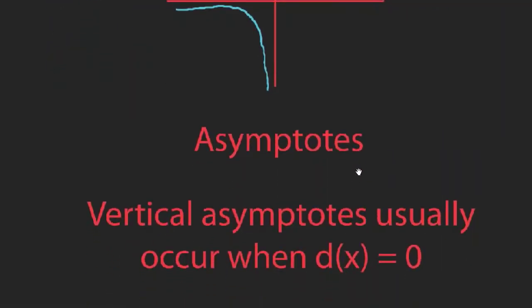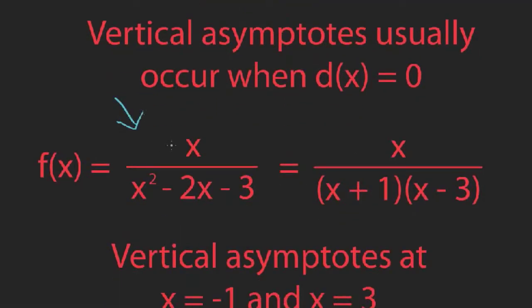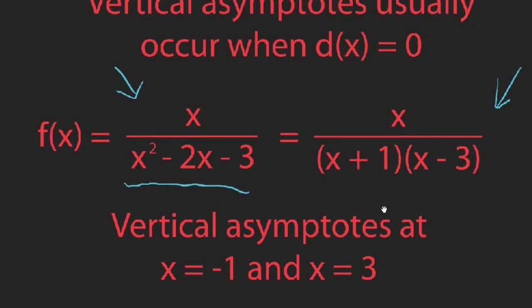Let's look at identifying the vertical asymptotes when your function is not as simple as 1 over x. Vertical asymptotes usually occur when the denominator is equal to 0 — you have a reasonably sized number divided by a really small number approaching 0. Here's an example: you might be given a rational function and asked to find the vertical asymptotes. First, try to factor it — you want to solve x squared minus 2x minus 3 equals 0. This does actually factor, giving vertical asymptotes at x equals negative 1 and x equals 3, because those are the x values that make the denominator equal to 0.